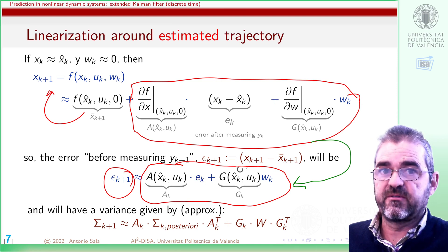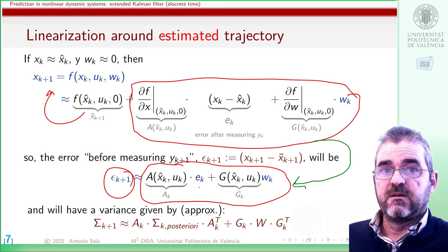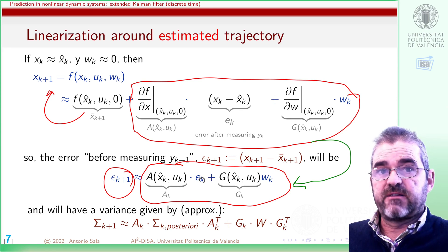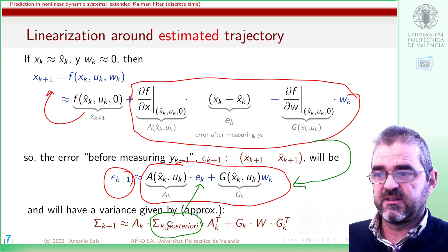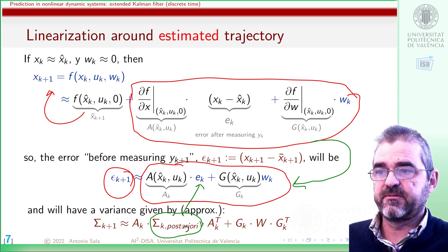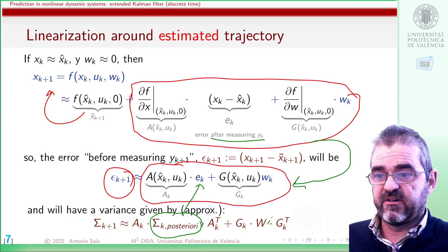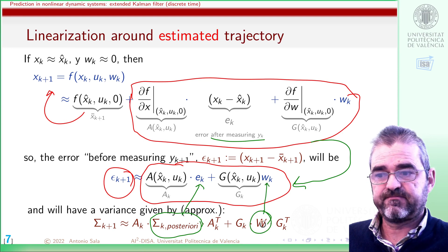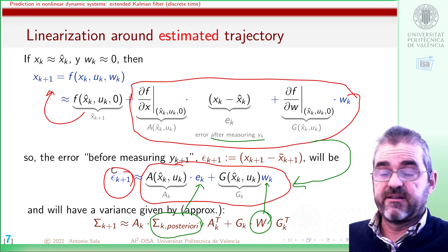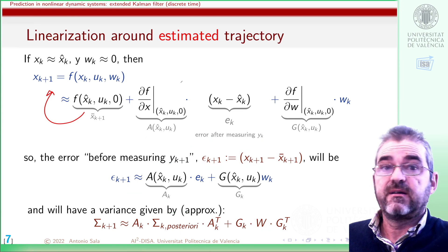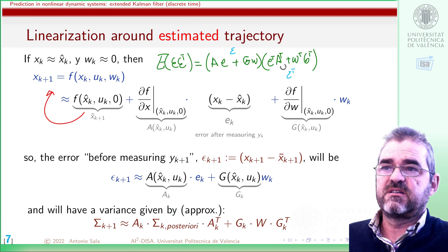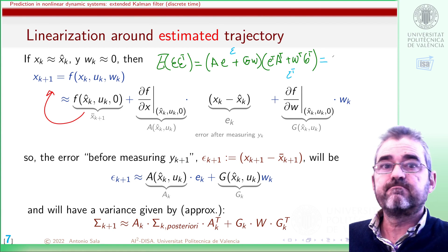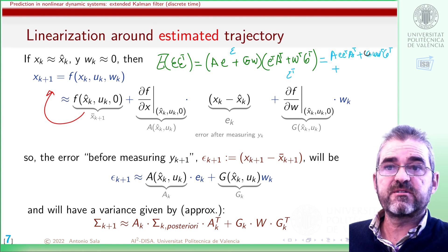But I don't know the things that multiply those matrices. No problem for the Kalman filter. So, if e is a random variable — assuming that I know its uncertainty, its variance with this sigma k posteriori — and I know the variance of the process noise, then the variance of this epsilon can be shown to be: this is epsilon times epsilon transposed, making operations, I have these two terms, which are the important ones.